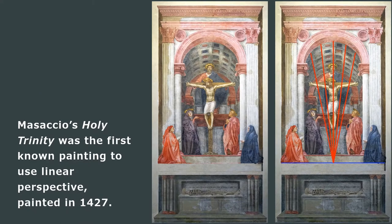It is called the Holy Trinity and was painted in 1427. Do you see how the lines in the painting come to one point below the cross? That's why it is called linear perspective. The lines come together at a vanishing point or focal point. Our eyes focus then on one particular spot.